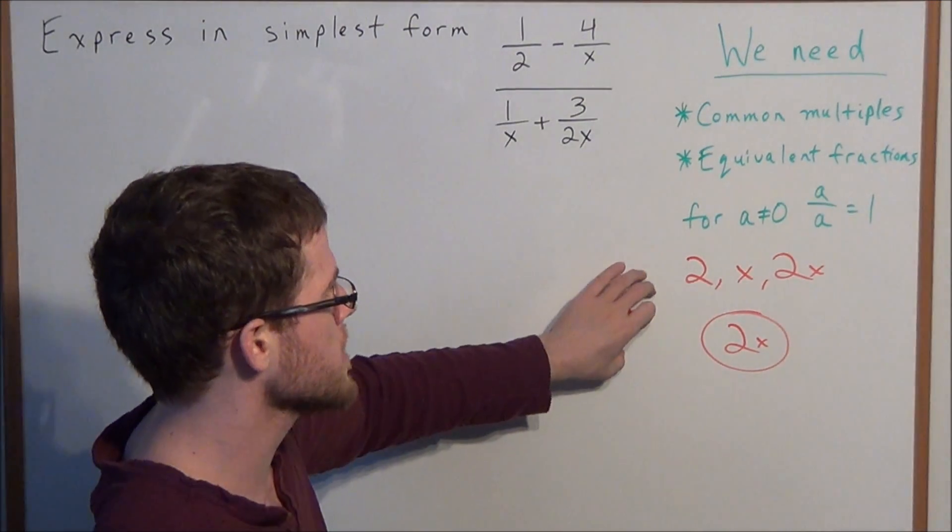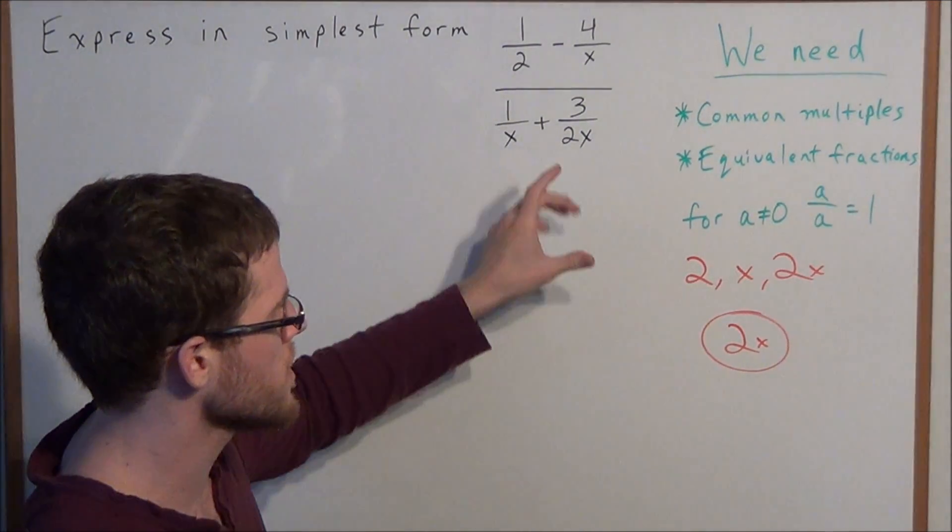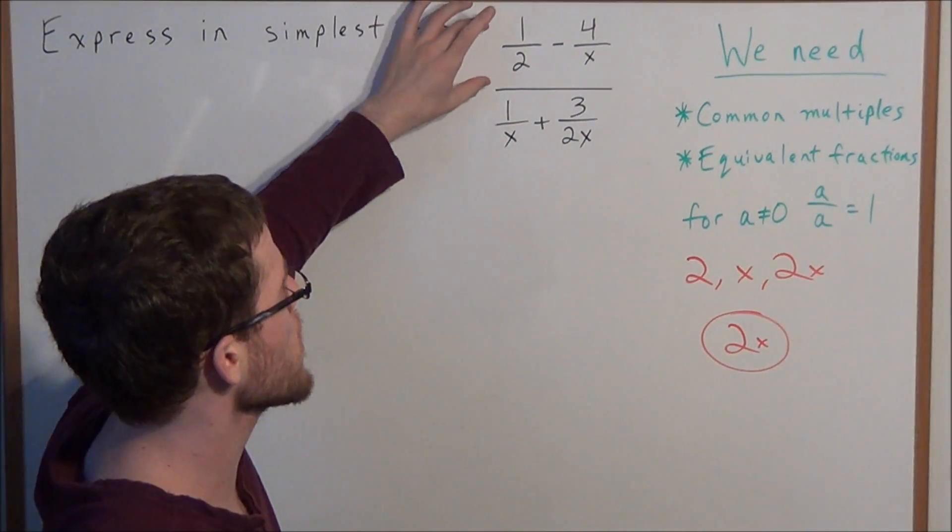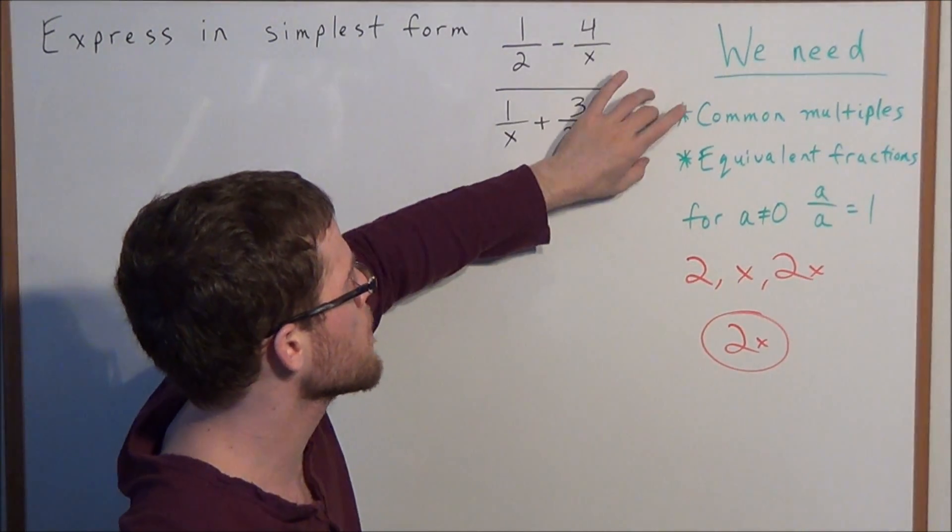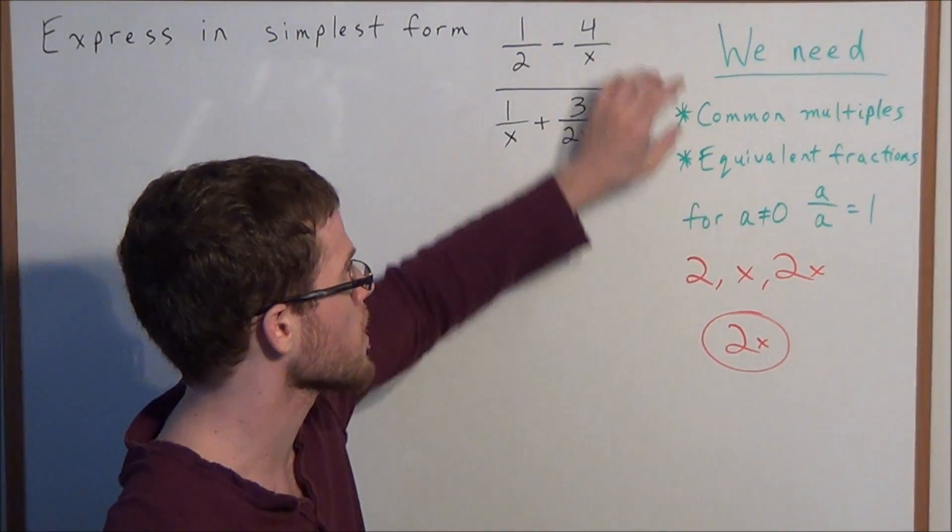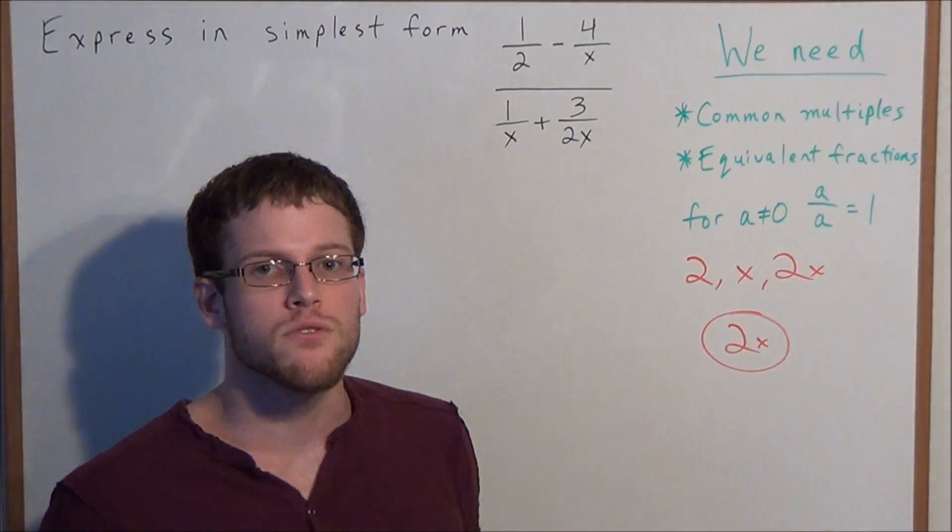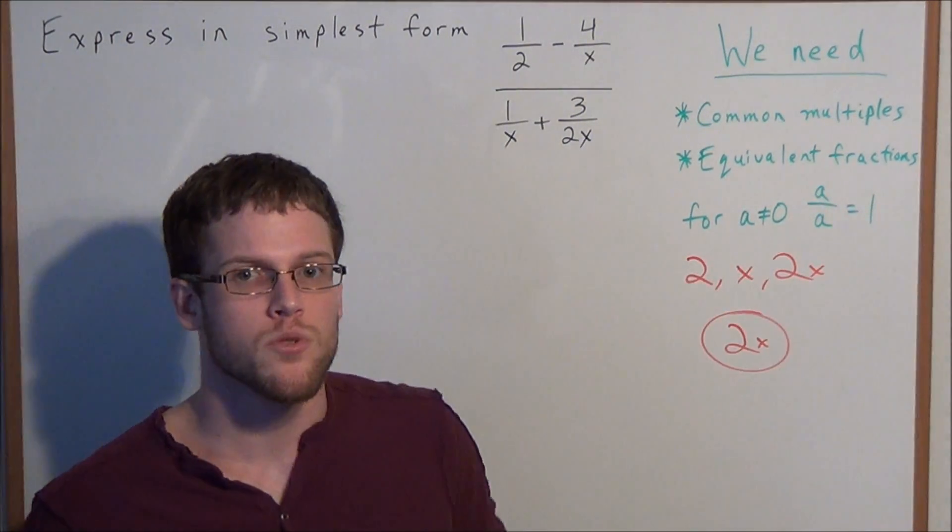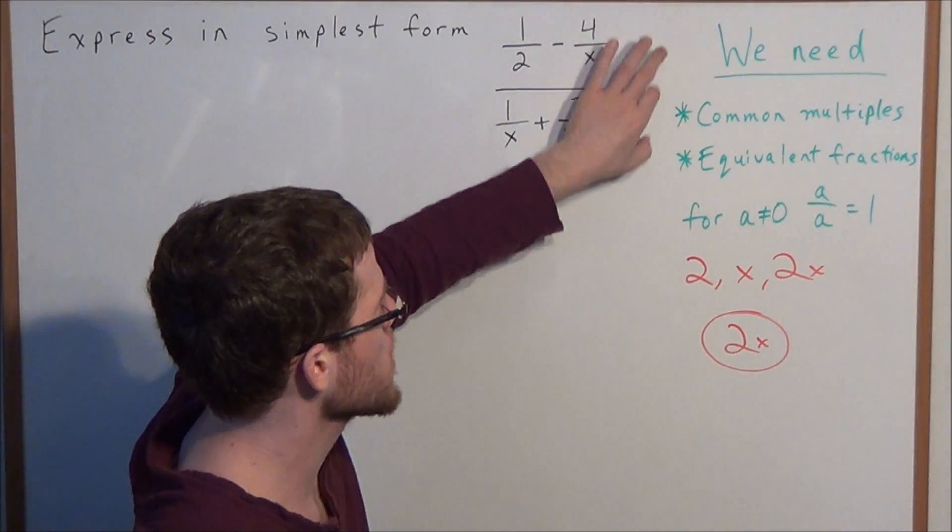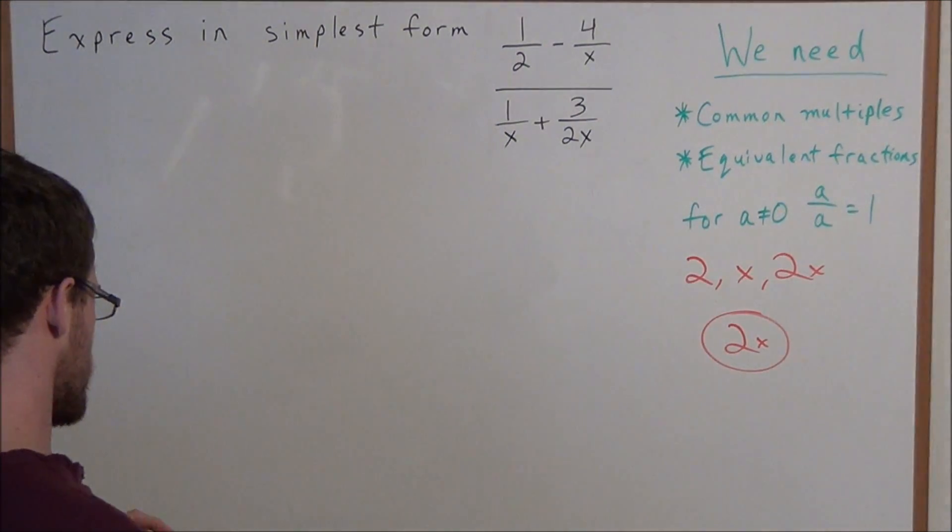And we're going to couple this idea with equivalent fractions, which if you'll remember back to I think it was 4th grade, when we generate equivalent fractions we want to multiply the numerator and denominator of some fraction by the same term. In this case that term is going to be 2x. And the reason why we can do that is because for any a value not equal to 0, a divided by a equals 1. So multiplying the numerator and denominator by the same term is like multiplying by 1.